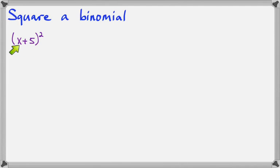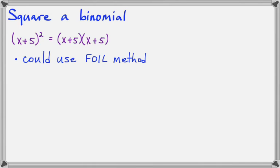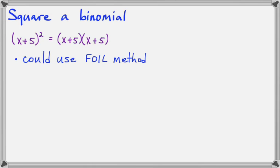It might seem at first glance like we could just square everything inside the parentheses, but because of the plus sign, that will not work. We know that the second power means we have to do x plus 5 times x plus 5, so this would require the FOIL method. But if we do a few of these, you'll notice that there's a shortcut that we can take.